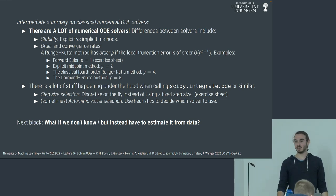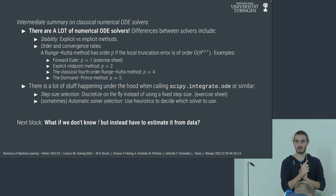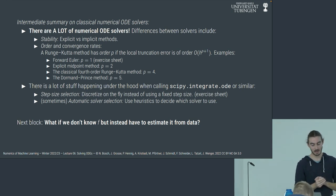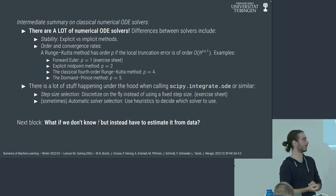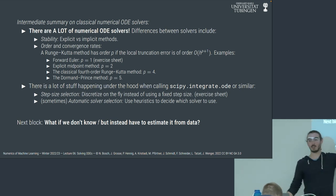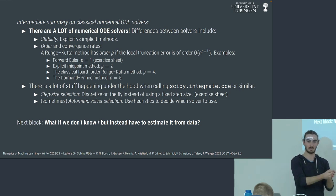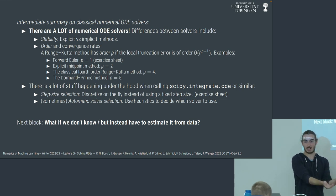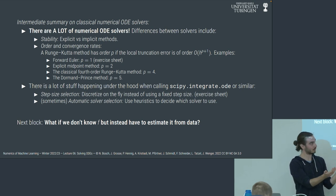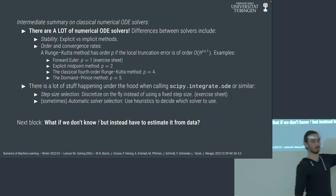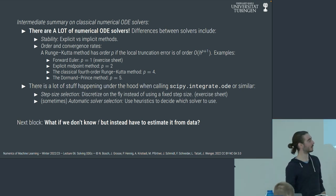That concludes the how-to-solve-ODEs part. Now we flip the problem setting, because up to now I assumed we are given an initial value problem: we have an initial value, we have a vector field, we know everything exactly. Still, we have to approximate because it's a hard problem. Now, we assume we don't know F and we don't know the initial value, maybe even. But instead, we do have data.